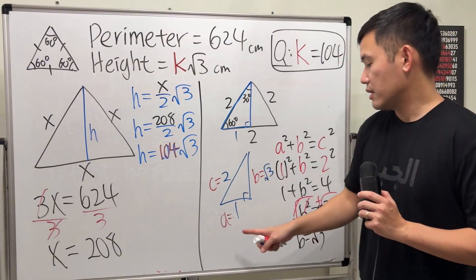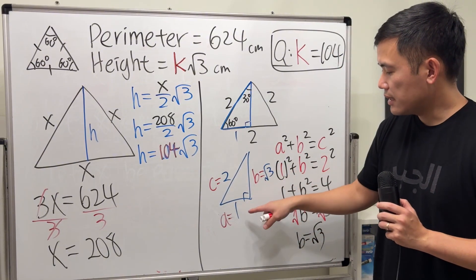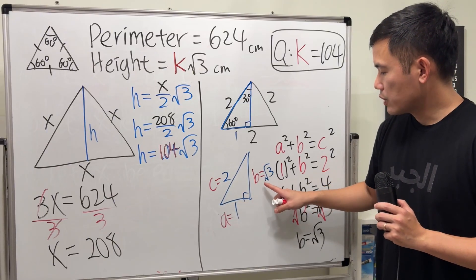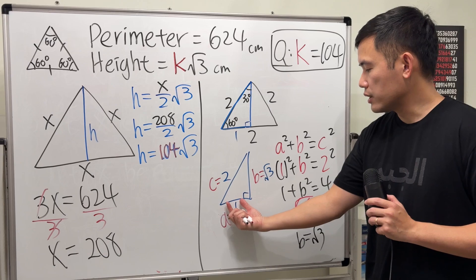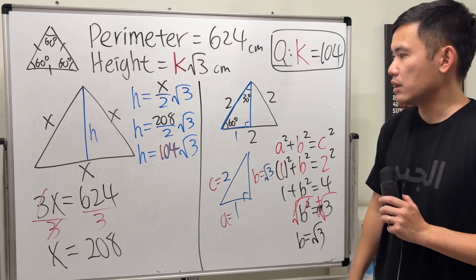So there we have it. The ratio of the sides is 1, square root of 3, and 2. 2 is the hypotenuse. 1 is the shorter side, and square root of 3 is the longer side.